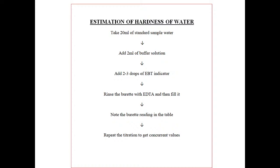How many titrations you have to take will be told on the day of the examination. Steps are simple: take the conical flask, add 2 ml of buffer solution, add 2 to 3 drops of EBT indicator, rinse the burette with EDTA, fill it, titrate, note down the burette reading, and repeat the titration to get concurrent values.